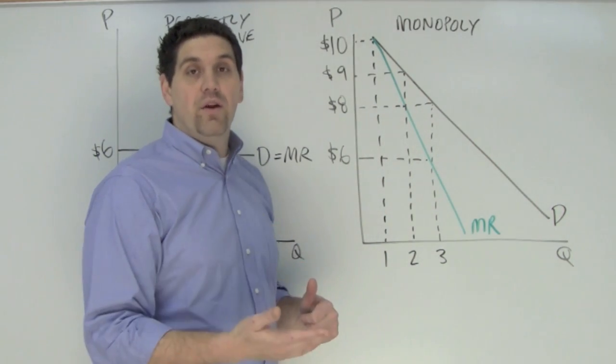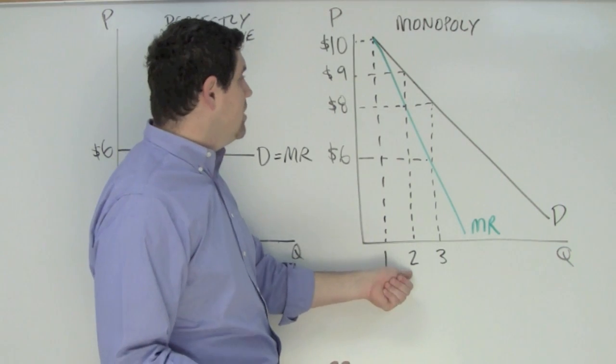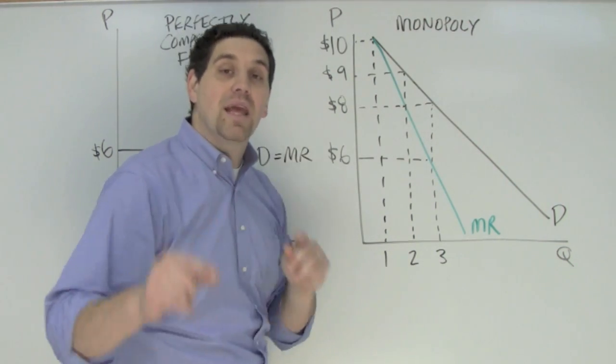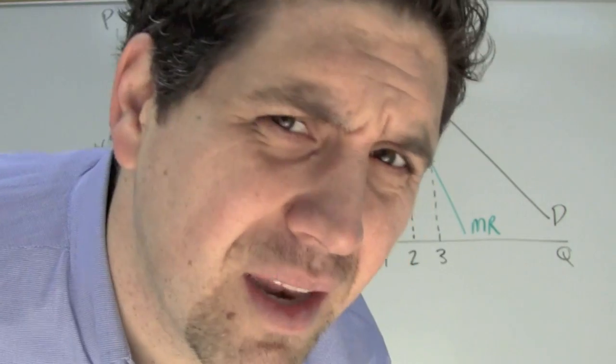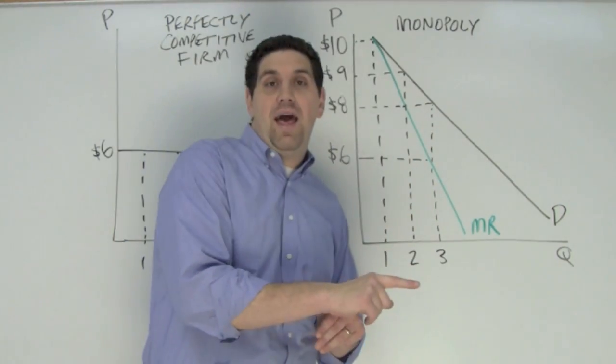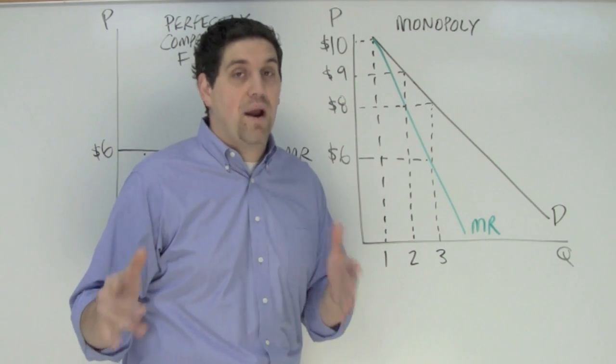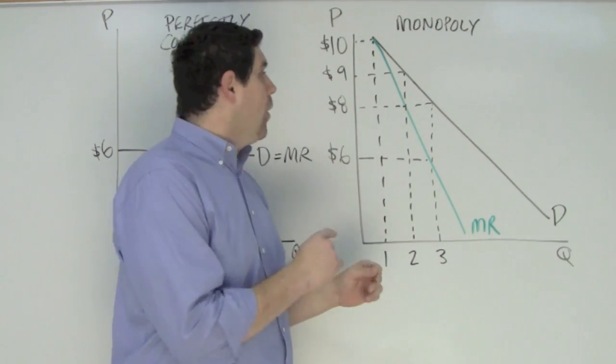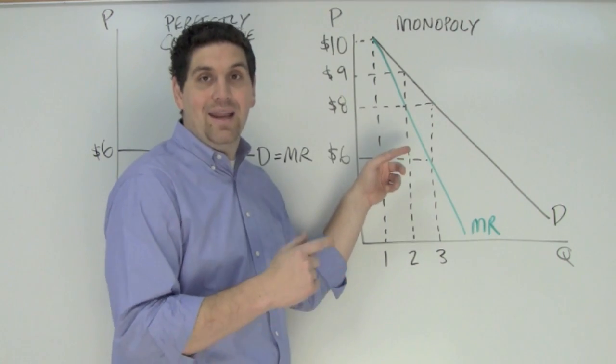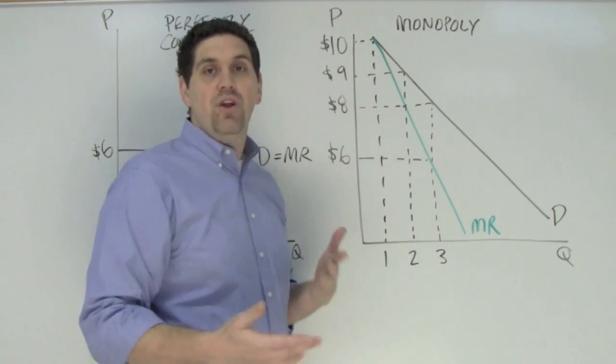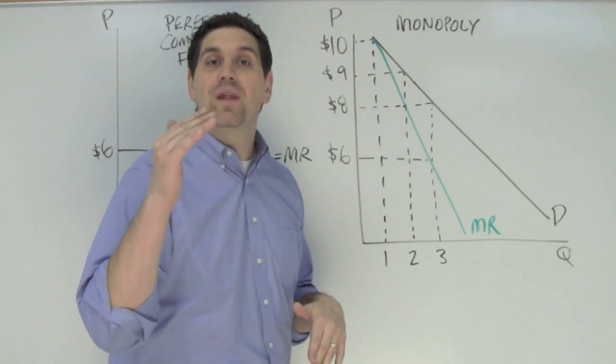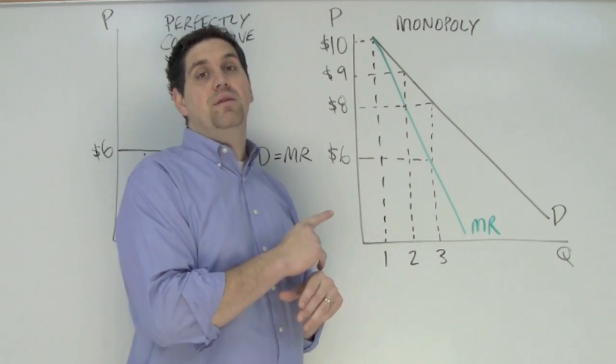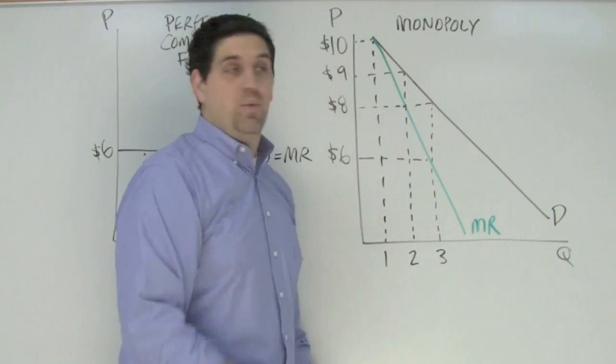Now this monopoly wants to sell another unit. To sell two units, people are willing to pay $9 - that's the price, so they charge $9. But they can't price discriminate. They can't charge one person $10 and another person $9. That's called price discrimination, and this is a non-price discriminating monopoly. So when the monopoly lowers the price to $9 to get someone to buy that second unit, they get $9 additional. But the marginal revenue is only $8 because they lose a dollar on the unit they could have sold at a higher price.